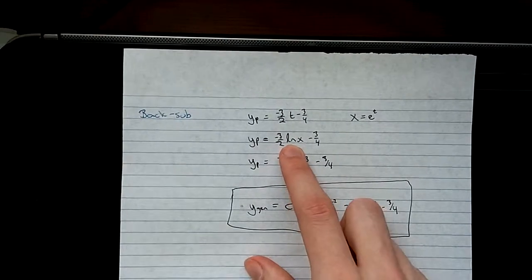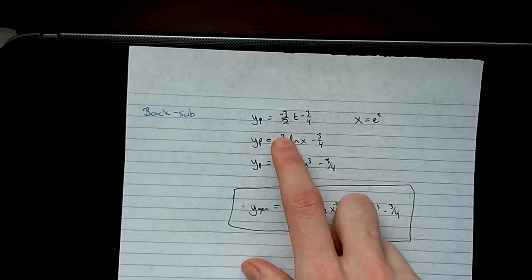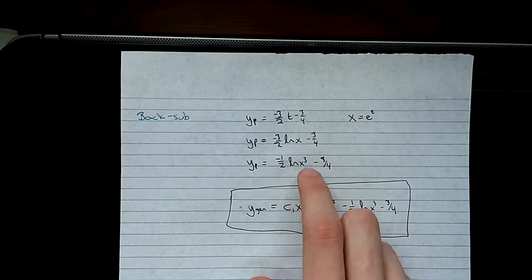And if you put it into Wolfram Alpha, it will actually give you this. They've just taken the 3 here using log rules and just put it into the natural log.